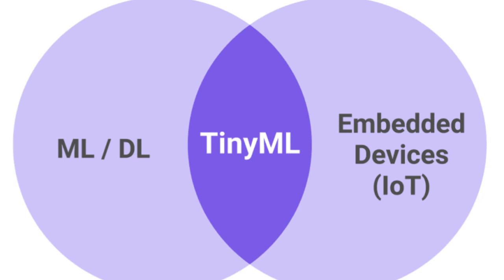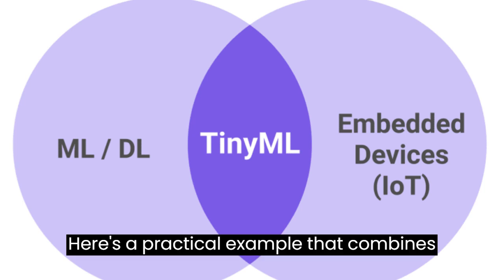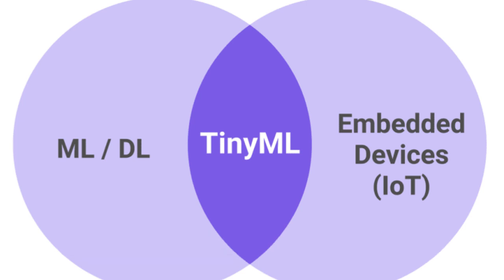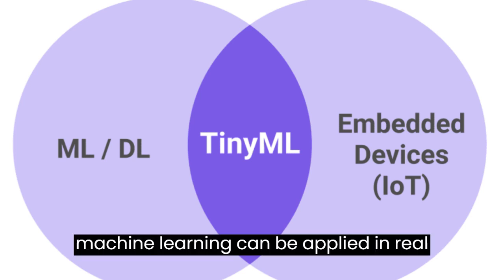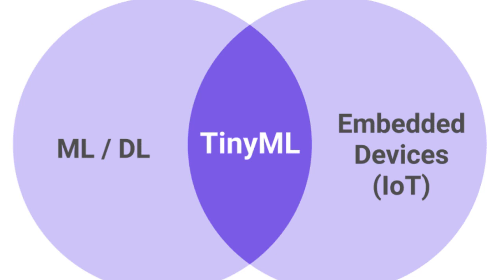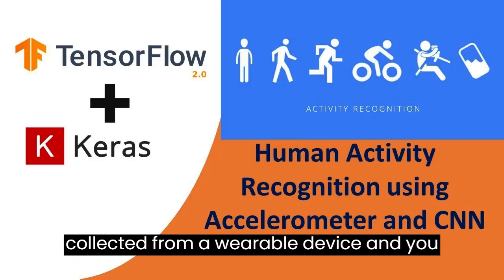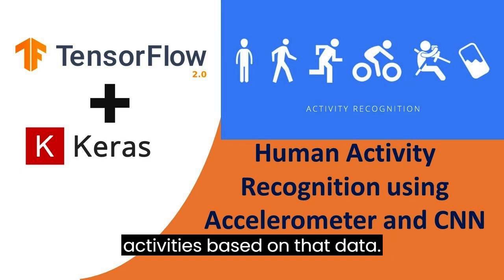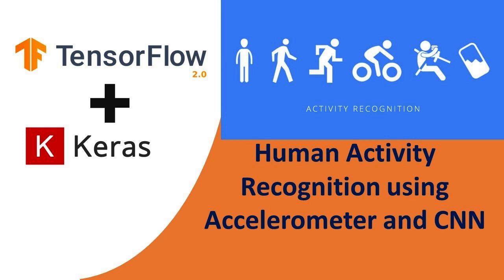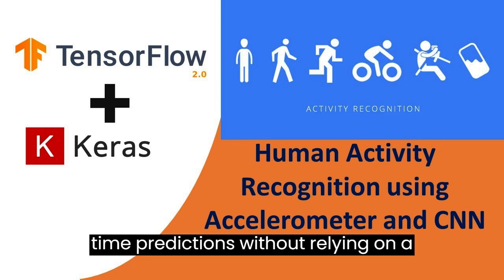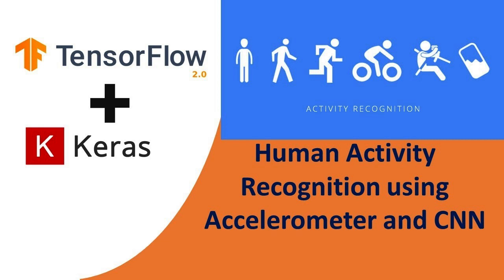Here's a practical example that combines TinyML and small data to demonstrate how machine learning can be applied in real-world scenarios. Imagine you have a small dataset of accelerometer data collected from a wearable device, and you want to classify different physical activities based on that data. You want to deploy a TinyML model on the wearable device itself to make real-time predictions without relying on a cloud server. Here's how you can approach it.